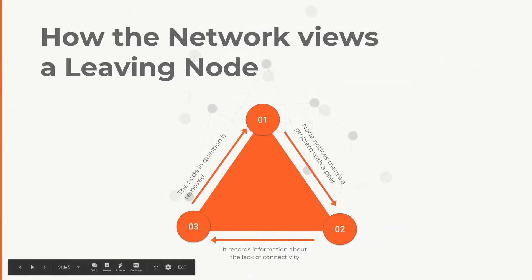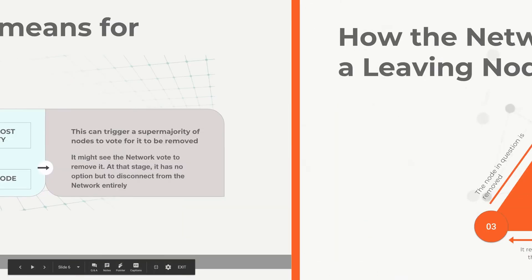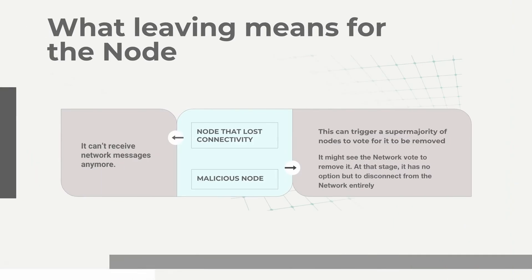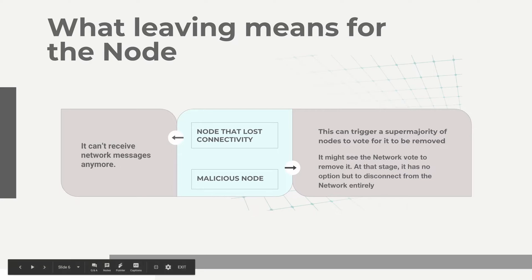It's different, of course, for the node that leaves. For a node that's lost connectivity, nothing else happens, simply because it can't receive network messages anymore. If, on the other hand, a node is seen to be malicious, or the node has perhaps partial but not total loss of connection, then that issue might be significant enough to trigger a super majority of nodes to vote for it to be removed. So it might see the network vote to remove it. At that stage, it has no option but to disconnect from the network entirely, because even if it chose to hang around, no honest node in the network would ever communicate with it, nor will they accept messages from it.